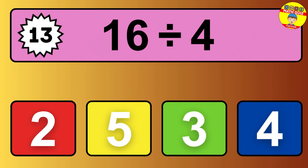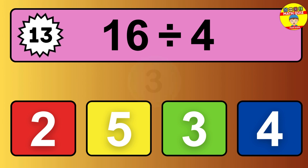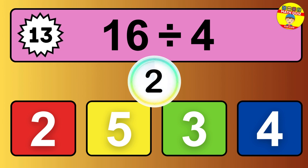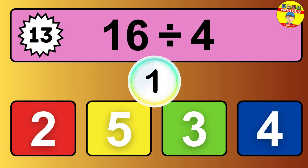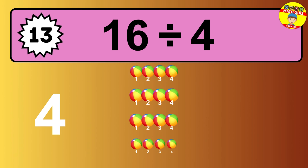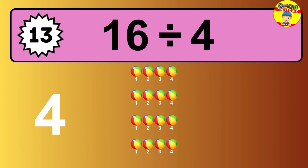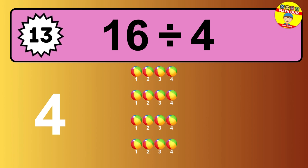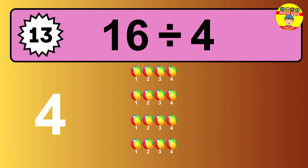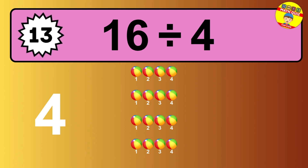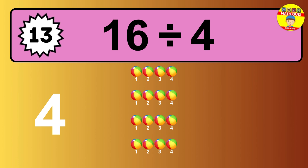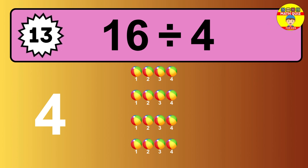16 divided by 4 — time to think. Let's go to the solution. Divide the number 16 by 4. Each group contains 4 units, so dividing 16 by 4 results in 4 equal groups. Thus, the result is 16 divided by 4 equals 4.